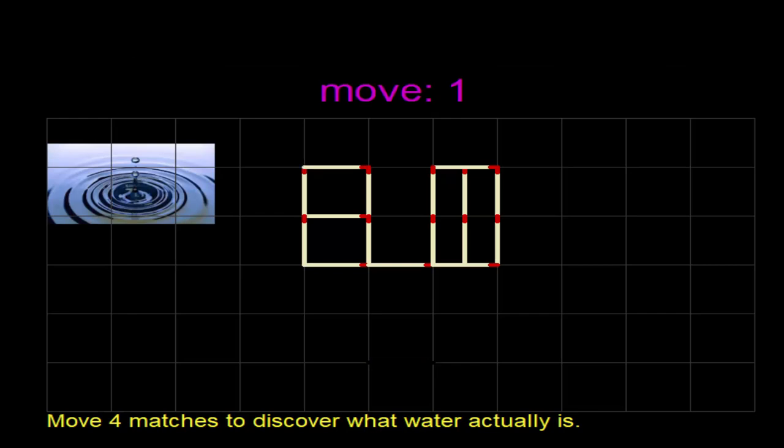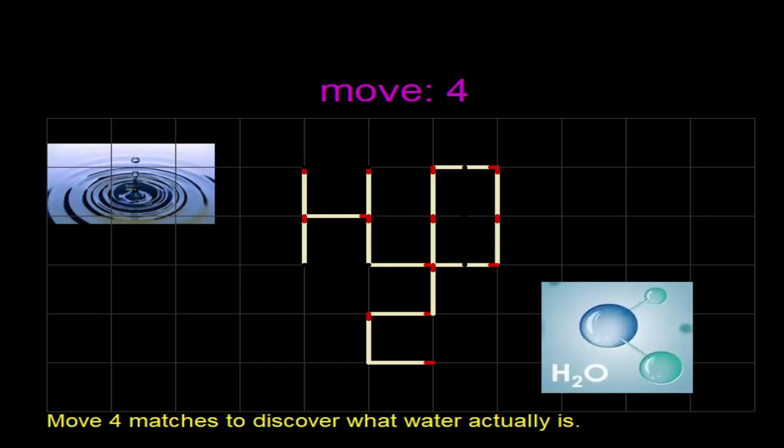Move number one. Move number two. The third one. And number four. There you go. What do we have? H2O. If you know your chemistry, I guess you will figure that out as being the molecular formula for the water molecule: two parts hydrogen, one part oxygen.